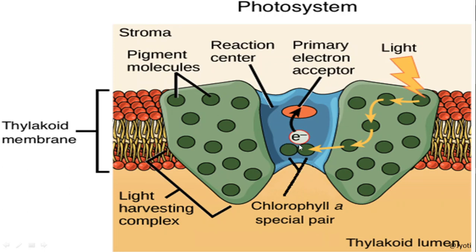The electron released from the reaction center is accepted by a primary electron acceptor. Photosystem 1 and photosystem 2 have different primary electron acceptors. The special pair of chlorophyll A forming the reaction center also differs in the wavelength of light it absorbs for each photosystem. Together, the reaction center and the accessory pigments surrounding it that harvest light are collectively called the light harvesting complex.